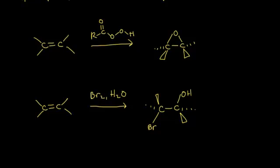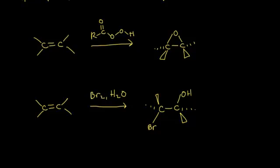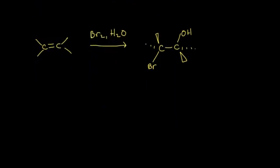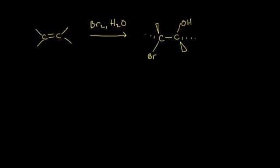Once you form a halohydrin, you can use it to form an epoxide. Let's see the mechanism of how we can form an epoxide from that. I'm going to redraw that halohydrin - put in the OH here with lone pairs of electrons, and then the bromine over here with its lone pairs of electrons as well.